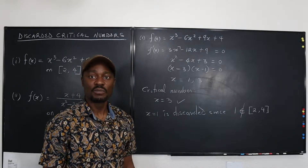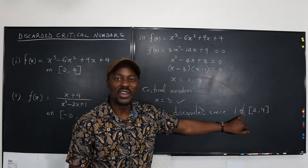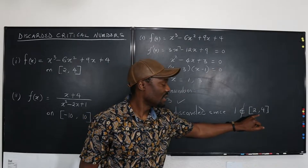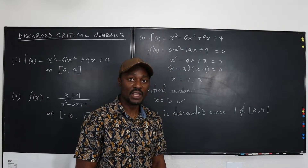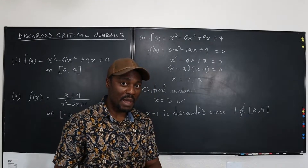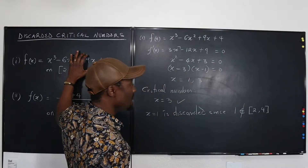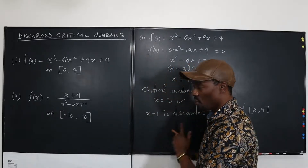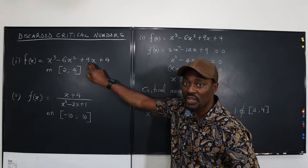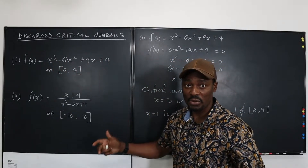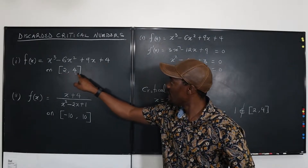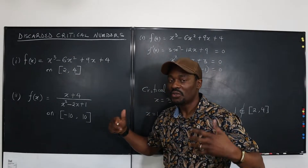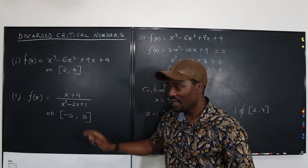When presenting your answer, you write that x equals one is discarded because one is not in the interval two to four — it's not a member of that interval. Note that one is in the domain of the function — you can plug it in with no problem — but it is not in the specified interval, so we discard it.